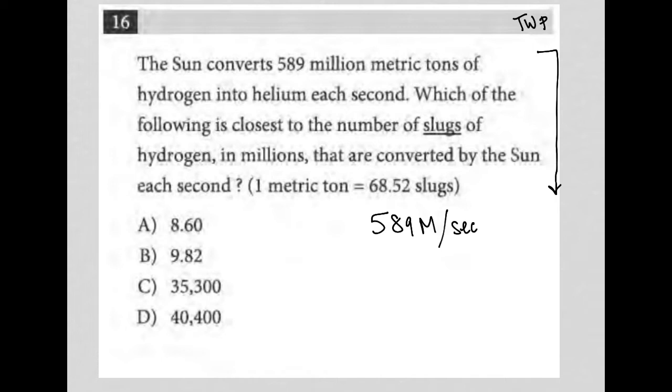Which of the following is closest to the number of slugs of hydrogen in millions that are converted by the sun each second? Well, I don't know what a slug is. A slug or one metric ton is equal to 68.52 slugs.